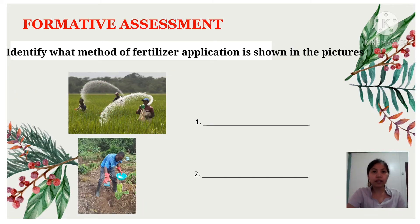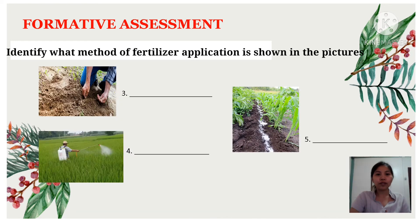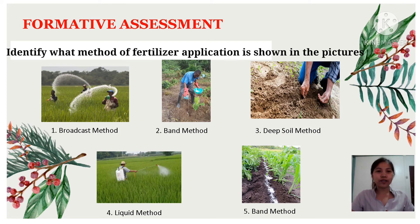For your formative assessment, identify the following illustrations. Here are the correct answers: Number 1 — broadcast method. Number 2 — band method. Number 3 — deep soil method. Number 4 — liquid method or liquid application. Number 5 — band method. I hope you got it correct.